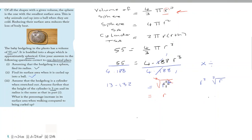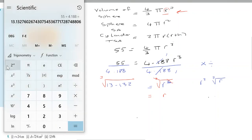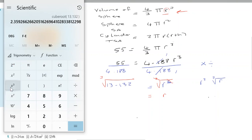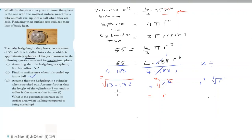We take the cube root of both sides. Using a calculator, the cube root of 13.132 is approximately 2.35, which to one decimal place is 2.4. So the radius is equal to 2.4 centimeters.